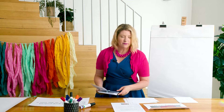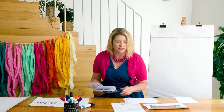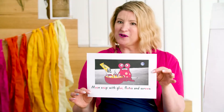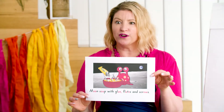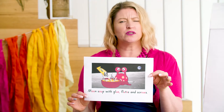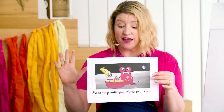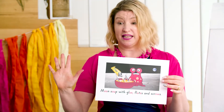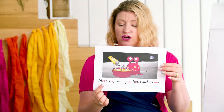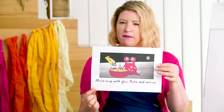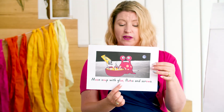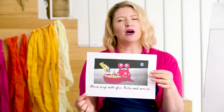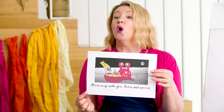Our first activity — actually before we start our first activity, let's have a look because there are so many different spellings. We've got a little memory hook to help us remember all those different spellings, because the OO sound is really tricky — there are five different graphemes that can make the OO phoneme. So this little sentence can help us remember them: moon soup with glue, flutes and screws. It's a bit of a silly sentence, but it helps us remember all those different spellings of OO.